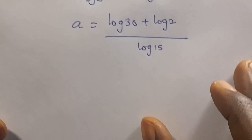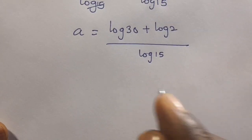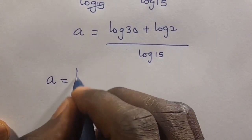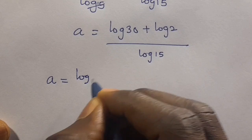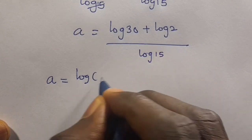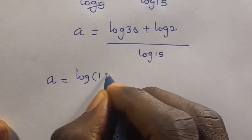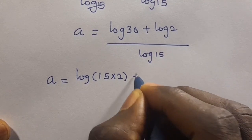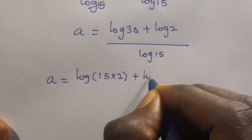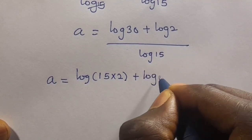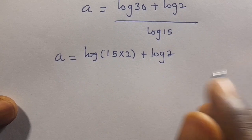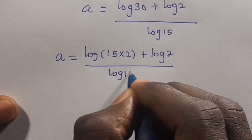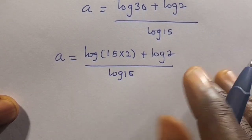From here, we have A equals log 30, and we can simplify log 30 as log of 15 times 2, plus log 2, all divided by log 15.